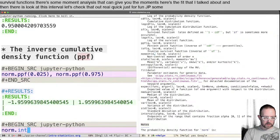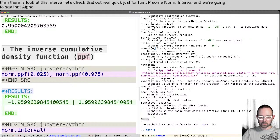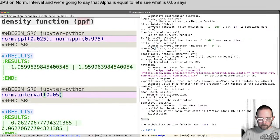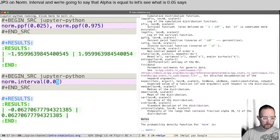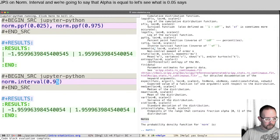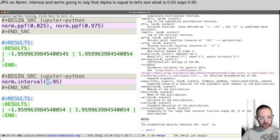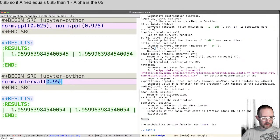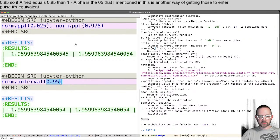JP, so norm.interval. And we're going to say that alpha is equal to, let's see what 0.05 says. 0.95. So if alpha equals 0.95, then one minus alpha is the 05 that I mentioned. And this is another way of getting those two intervals. It's equivalent to this thing up here.